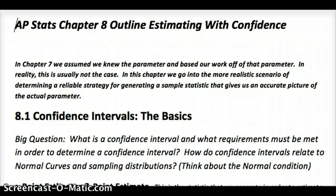So here we're looking at the sample statistic and generating one that gives us an accurate picture of the actual parameter since that's what we usually do. If we already knew the parameter, there wouldn't be a whole lot of point in taking a sample statistic. So we looked at that stuff in the previous chapter as a way of understanding the rules and how a sampling distribution relates to the population distribution. In 8.1 we just look at what is a confidence interval and the requirements that must be met. They're the same as before: random, normal, and independent.